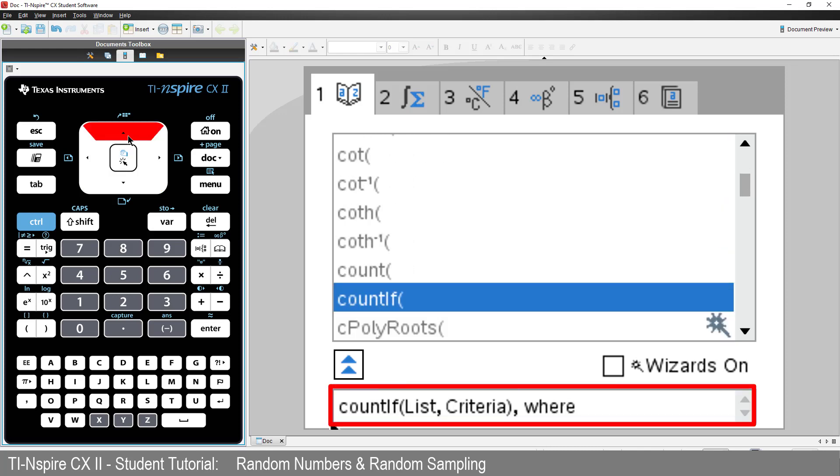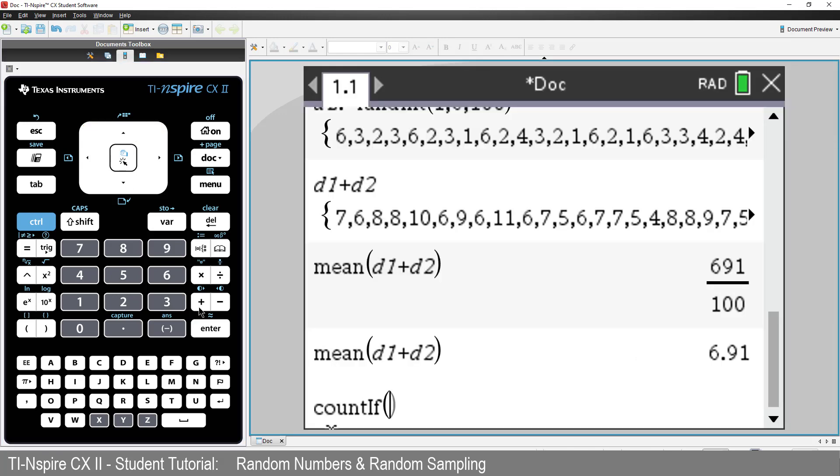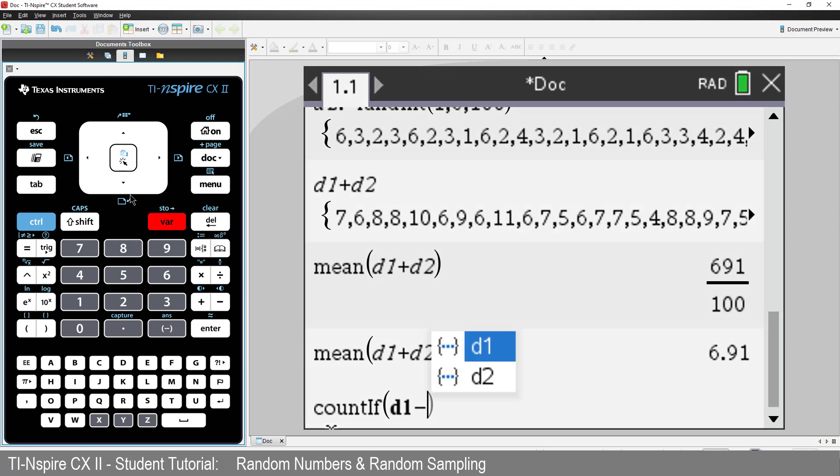And we see the syntax calls for a list. We'll make that Dice1 minus Dice2. Then a criteria. If we rolled a double number, then the difference between the two dice would be 0. So our statement reads, count if the difference in the dice is 0.